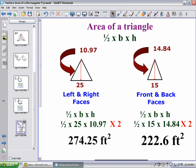Because the front and back triangles are going to be the same, congruent, and the left and right triangles are going to be the same, congruent. When I do the left and right triangular faces combined together, I get 274.25 feet squared. And when I do the front and back triangular faces together, I get 222.6 feet squared.